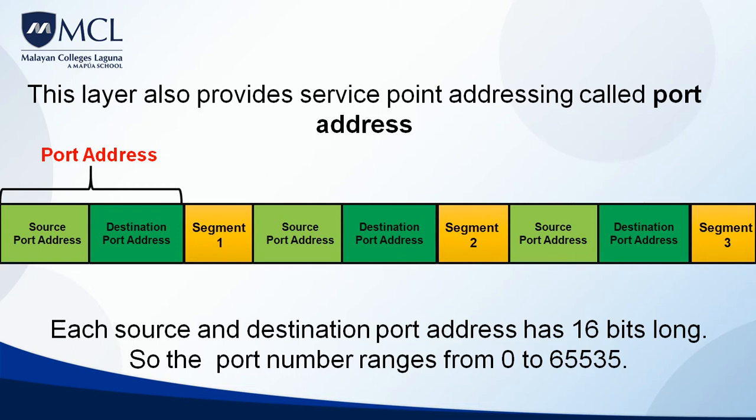Why 65,535? Because 2 raised to 16 equals 65,536. Since there is a port number 0, it becomes 65,535 — port number 0 accounts for the 65,536th value.